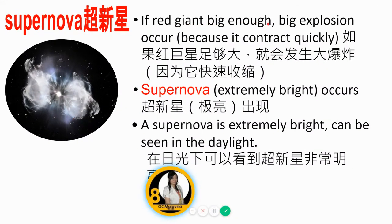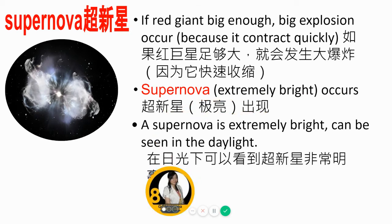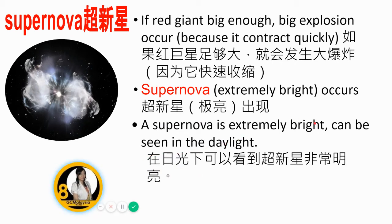If the red giant is big enough, a big explosion occurs because it contracts quickly. This explosion is called a supernova. A supernova is extremely bright and can be seen in daylight.